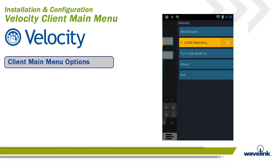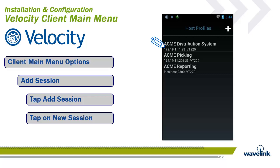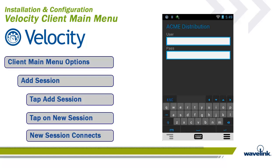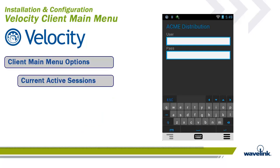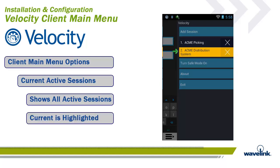The first option of the Velocity Client Main Menu is Add Session. From this option, you can open another session parallel to your current session. Velocity allows for up to four concurrent sessions per client. To add a new session, tap on Add Session, then from the Initial Client screen, tap on the session you wish to execute. The session connects and is now running concurrent with the previous session, with the new session taking focus. The Client Main Menu also displays all sessions active on the client. The session that had focus when you called the Client Main Menu is highlighted. To change to another session, just tap on that session, and the Client will toggle you back and forth as needed.